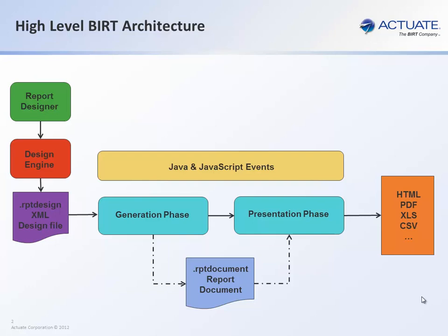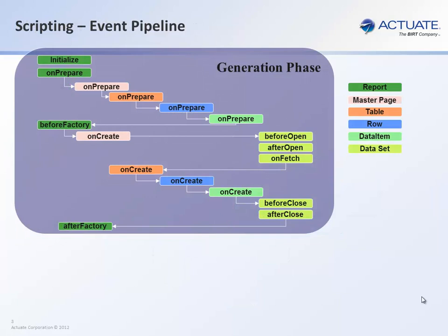So how does the BERT engine fire off the events, and in what order? Let's first talk about the generation phase. The first event that gets called is the initialized event of the report. That, in turn, will call the unprepared event of the report, which will, in turn, call the unprepared of the master page. Then the unprepared of your table, which will call the unprepared of the row within that table, and then it will call the unprepared for each data item within that row.